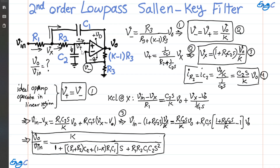Intuitively, why is this a low-pass filter? At super low frequencies, or DC, the impedance of the caps is 1/Cs. In sinusoidal steady-state analysis we replace s with jω, so impedance of cap becomes 1/jCω. At DC, omega approaches zero, so the denominator approaches zero and the impedance of the cap goes to infinity — meaning the caps are open.